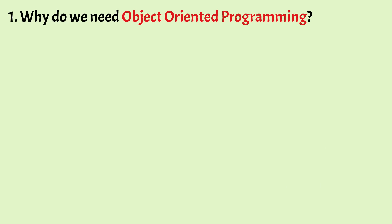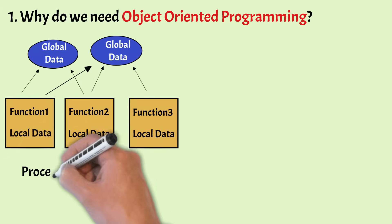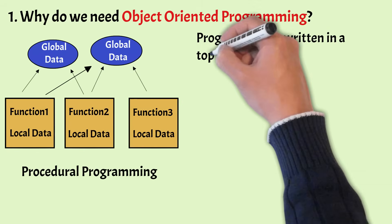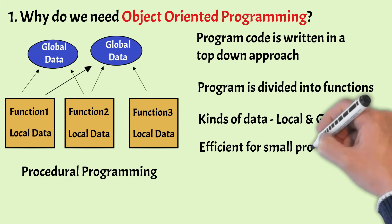Why do we need Object Oriented Programming? Object Oriented Programming was developed because of the limitations discovered in earlier approaches to programming. Before OOP, there were procedural languages which include C, Pascal, Fortran, etc. In a procedural program, code is written in a top-down approach and the program is divided into functions or procedures. There are also two kinds of data: local data and global data. Local data is defined in a function and is accessible only by that function, and global data is accessible by any function in a program. This is a very simple style of programming and is very efficient for small programs.